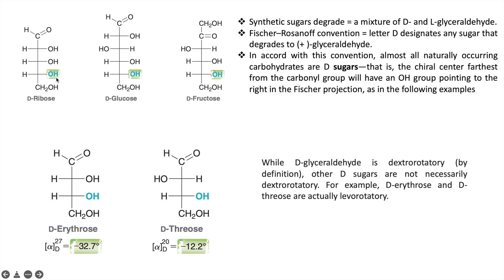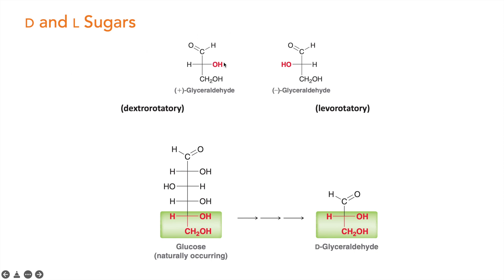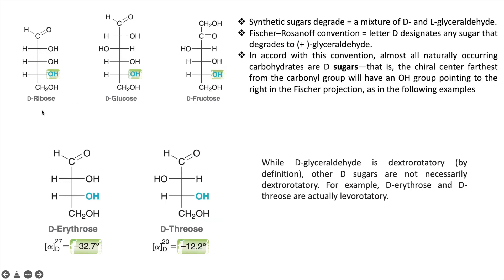The solution: look at the hydroxyl group on the chiral carbon farthest from the aldehyde group. If that hydroxyl is on the right side — matching the D-glyceraldehyde structure — the sugar is given the D designation. For example, in ribose, the hydroxyl group farthest from the aldehyde is on the right, so it is called D-ribose. Similarly, in D-glucose, the hydroxyl on the farthest chiral carbon is on the right.